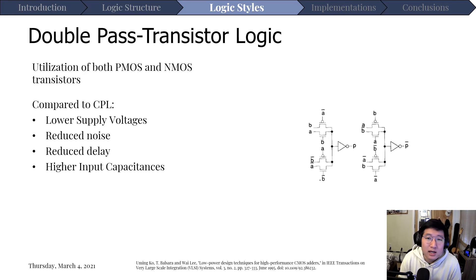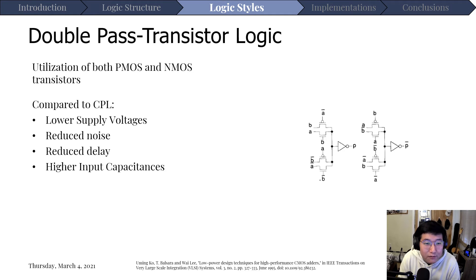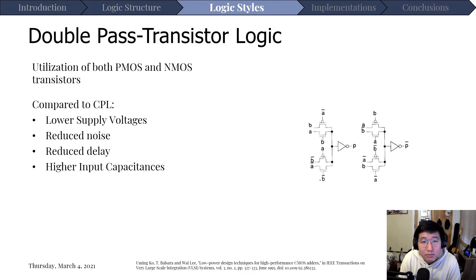An alternative to CPL is double pass transistor logic, or DPL. This is another pass transistor logic, but instead of using only NMOS transistors, it also uses PMOS transistors. The introduction of PMOS transistors causes major changes and gives big benefits over CPL: you can use much lower supply voltages with much lower noise and delay. However, we're back to the problem of higher input capacitances since both PMOS and NMOS transistors are used.